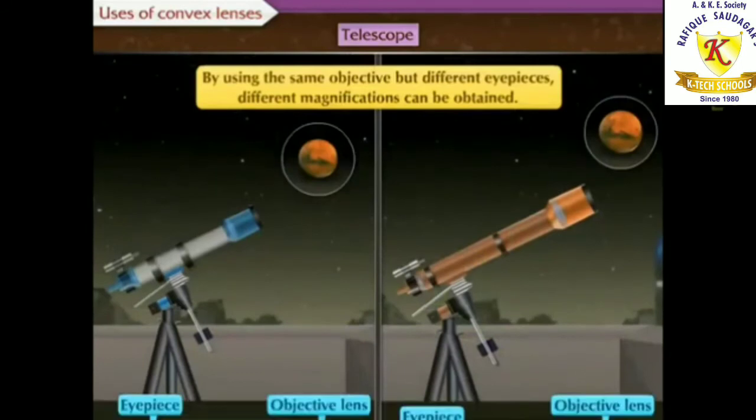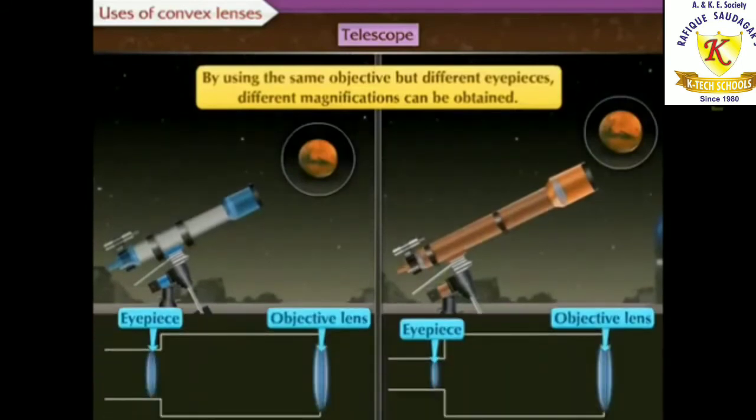Generally, by using the same objective but different eyepieces, different magnification can be obtained. These were the uses of convex lenses in the three types of microscope.